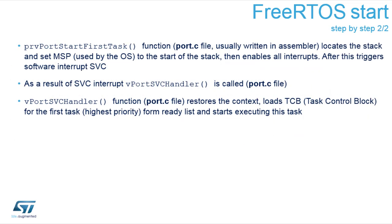The port start first task locates the stack, sets the MSP and PSP, and triggers a software interrupt which calls the SVC handler. The SVC handler restores the context, loads the TCB from the first task you implemented, and starts executing that task. So you can see it is a series of different steps before your first task starts, but it all makes very clear sense.